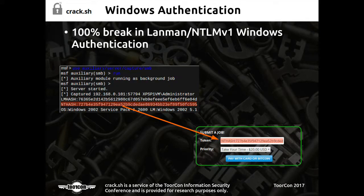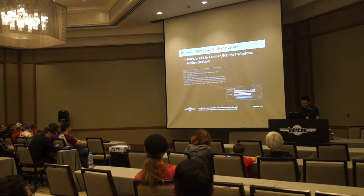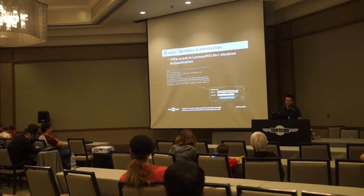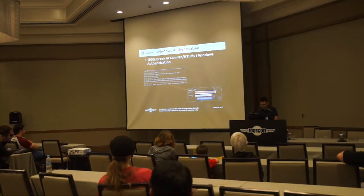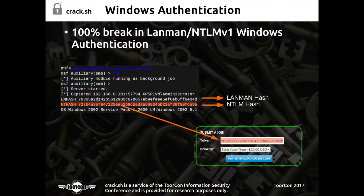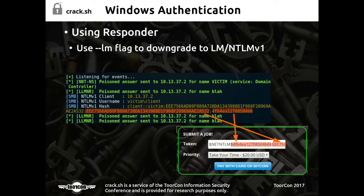It turns out you can take the values that SMB capture or Responder spit out — it's essentially MS-CHAPv1, pretty similar to MS-CHAPv2 — and plug that right into our website and crack someone's NT hash. This works no matter how complex the person's password is, because you're cracking the NT hash, not the password. We updated the site to take these hashes directly from SMB capture and Responder — just copy and paste to get the NT hash for any captured authentication.